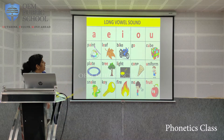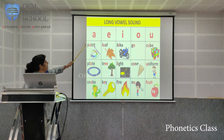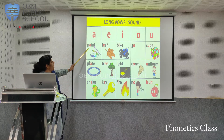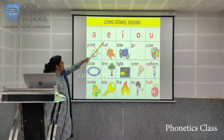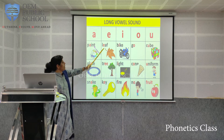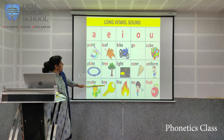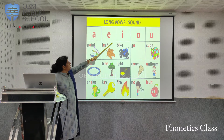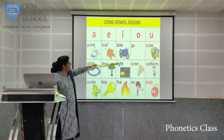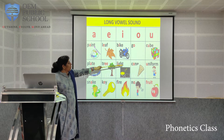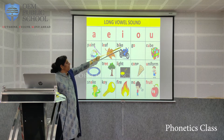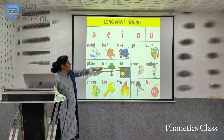Now we will get familiar with the long vowel sounds. Long A as in paint — the A is more prominent — plate and snake. These are the long A sounds. For long E: leaf, tree, key. Long I as in bike, light, fire. Long O as in go, cone, and know. And long U as in cube, uniform, and fruit.